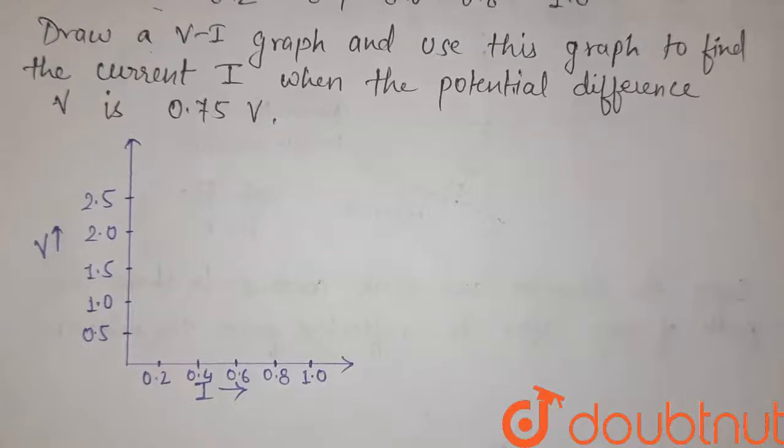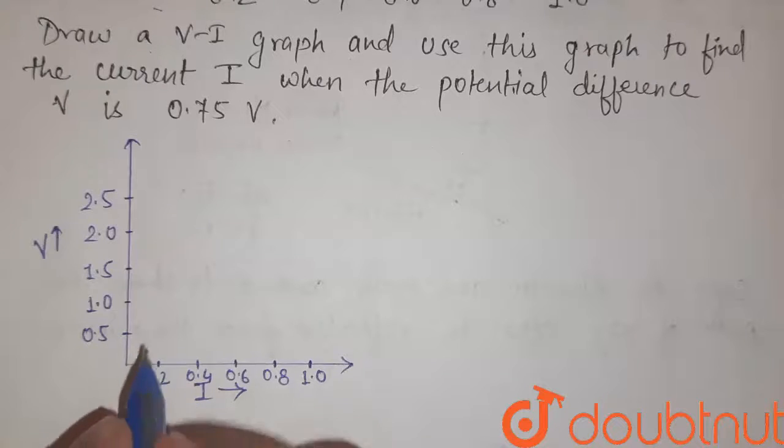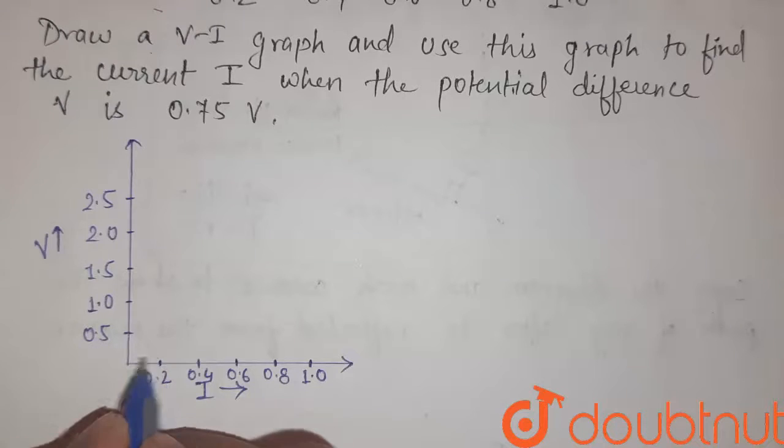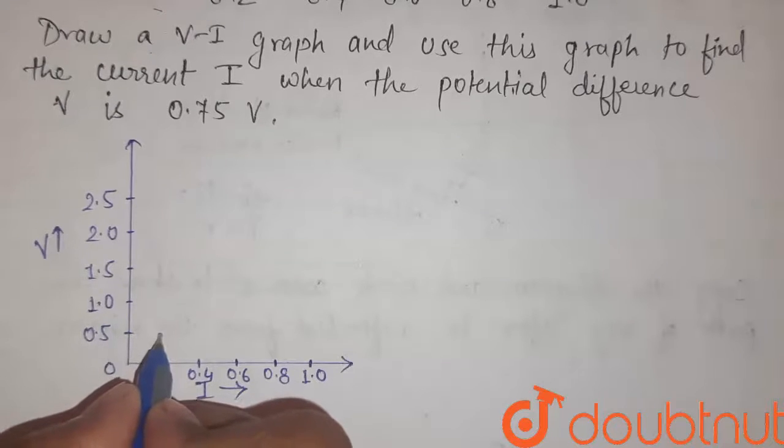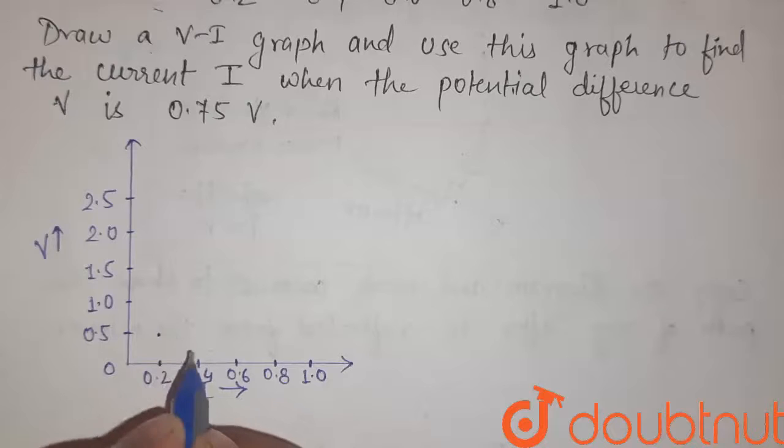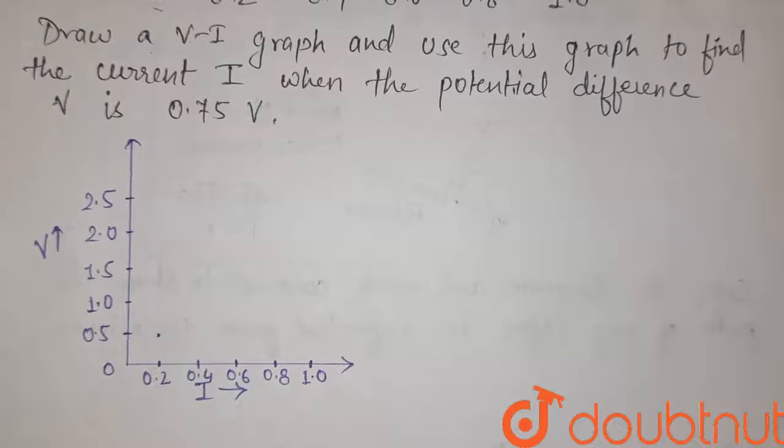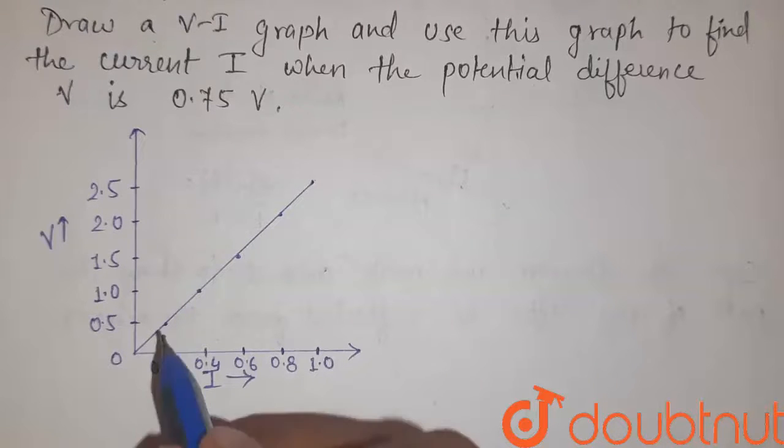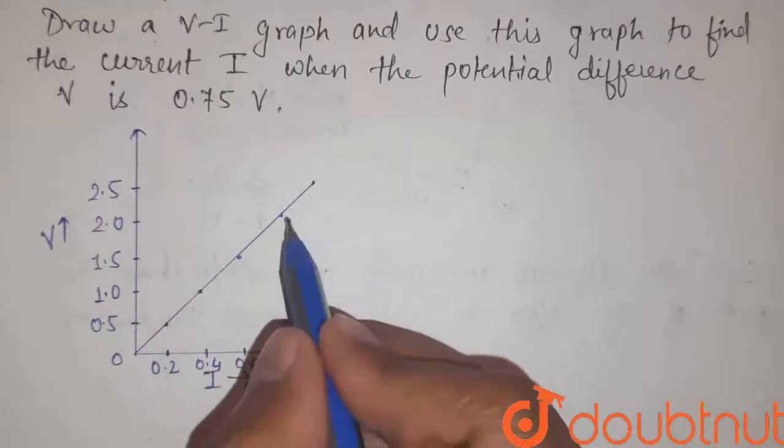So here is the graph. Now let us plot the above given points to plot the graph. So the first point is 0.2 (that is current) and 0.5 is voltage. So first point is this. Now similarly plot all the points and connect them to form a graph. Now this is the required graph after plotting the given points, and we can see that it is a straight line.